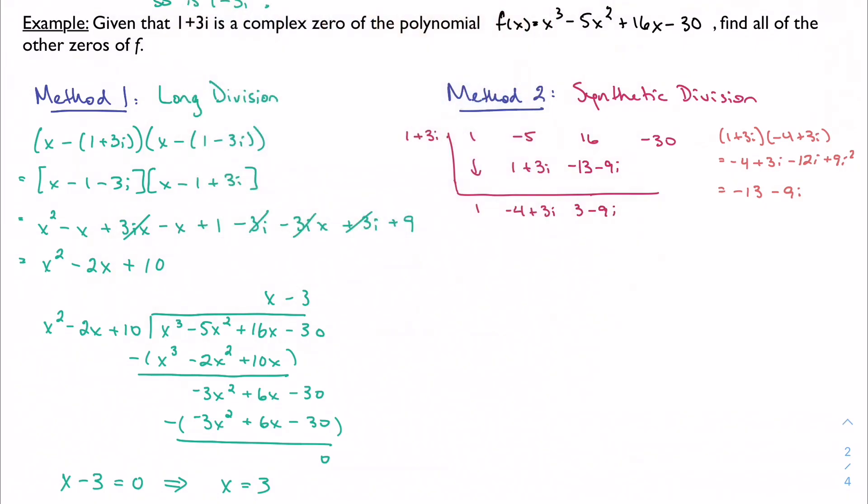3 minus 9i. And we're going to have to do some side work again. So again, I'm just going to write the FOIL out. I'm not going to try to do this in my head. Plus 9i.